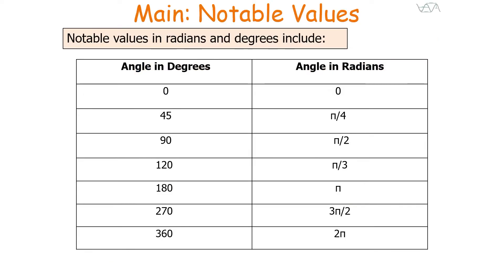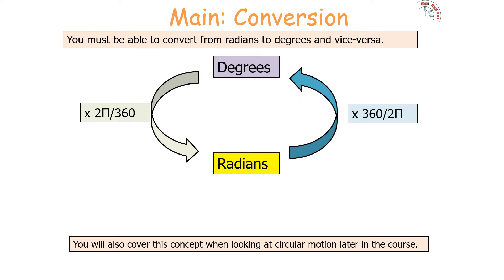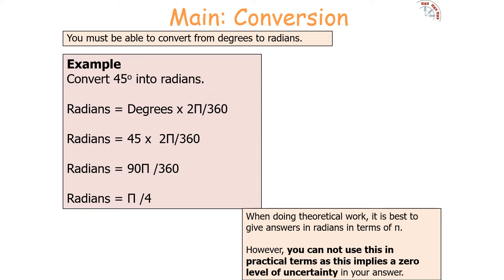Here are some notable values in radians and degrees: 45 degrees is π over 4 radians, 120 degrees is π over 3 radians, 180 degrees is π radians, and 360 degrees is 2π radians. You need to be able to convert between radians and degrees, and you'll also cover this when you study circular motion later. For example, to convert 45 degrees into radians, you multiply the degrees by 2π over 360, giving you 45 × 2π/360, which works out to π over 4 radians.